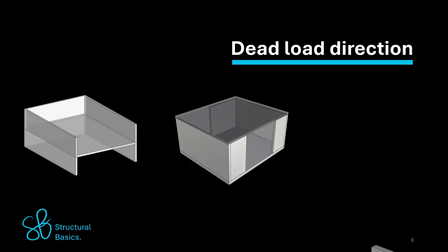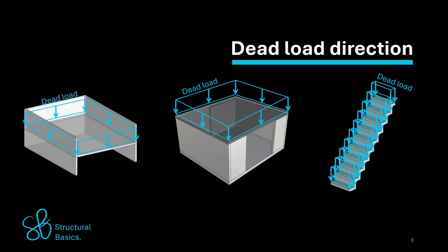like for example a slab, a flat roof, or stairs. And in that case, the dead load can simply be applied vertically to the horizontal element.